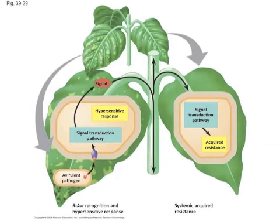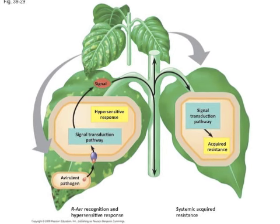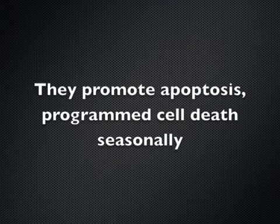Ethylene helps leaves abscise, along with ABA. Apoptosis — programmed cell death — happens seasonally.